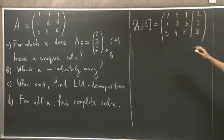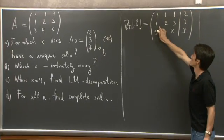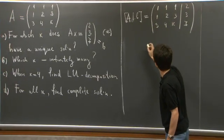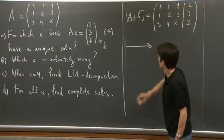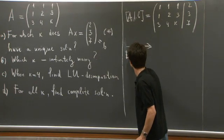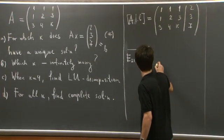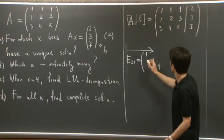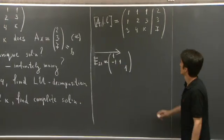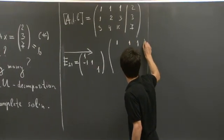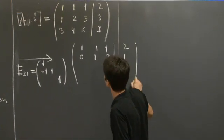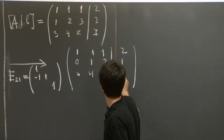OK, so first thing, we subtract a multiple of row 1 from row 2. And it's exactly negative 1 times the first row plus the second. So let me write down the corresponding elementary matrix that does this. It's E21, and it's lower diagonal with ones on the diagonal. And it's going to be exactly minus 1 in the first entry of the second row. OK, so we get 1, 1, 1, 2; 0, 1, 2, 1. And we copy down the third row.